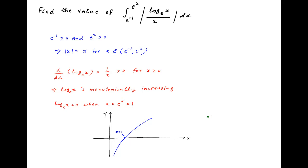Now the value of e is approximately 2.7. Therefore it follows that 1 upon e, or e raised to the power minus 1, is a number less than 1, and e square is a number greater than 1.